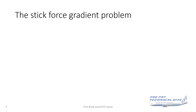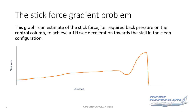Let's take a closer look at this stick force gradient problem. This graph is an estimate of the stick force — the required back pressure on the control column to achieve a one-knot-per-second deceleration toward the stall, in the clean configuration. Stick force is on the left, reducing speed going toward the right. The stall warning speed VSW is around here, and the stall break is clearly shown by the drop in stick force. The problem area is where you've got a gradient reversal on the stick force — and that is non-compliant.